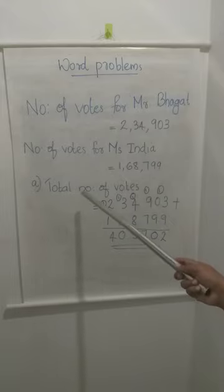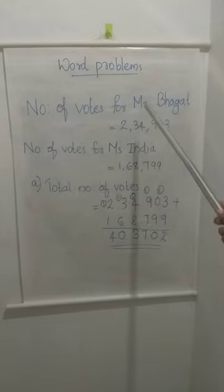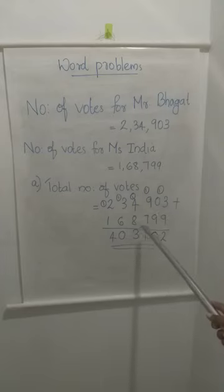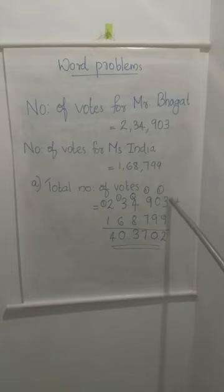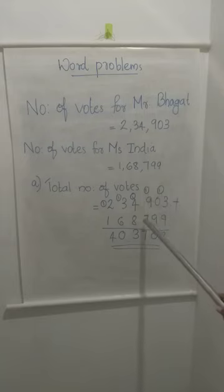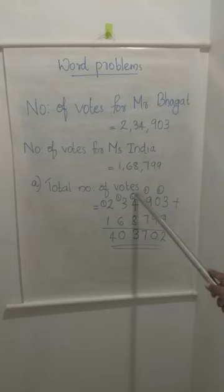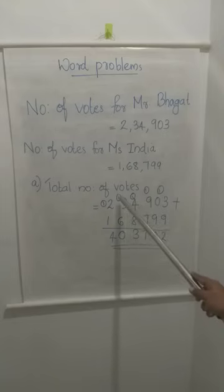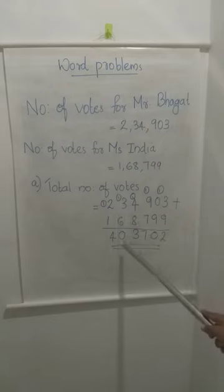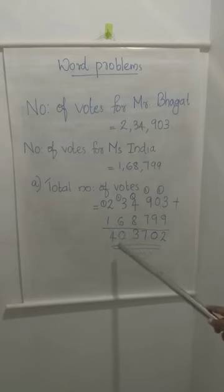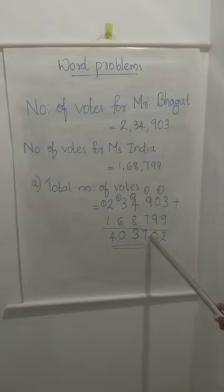Now the first question: finding the total number of votes. We add 2,34,903 and 1,68,799. 9 plus 3 is 12 — write 2, carry 1. 9 plus 0 is 9, plus 1 carry is 10 — write 0, carry 1. 9 plus 7 is 16, plus 1 is 17 — write 7, carry 1. 8 plus 4 is 12, plus 1 is 13 — write 3, carry 1. 6 plus 3 is 9, plus 1 is 10 — write 0, carry 1. 2 plus 1 is 3, plus 1 is 4. So the total number of votes is 4,03,702.